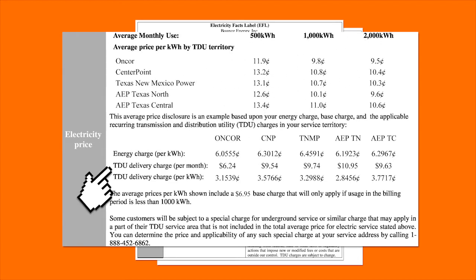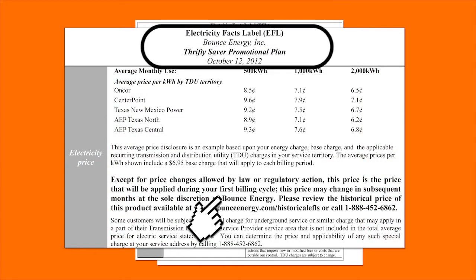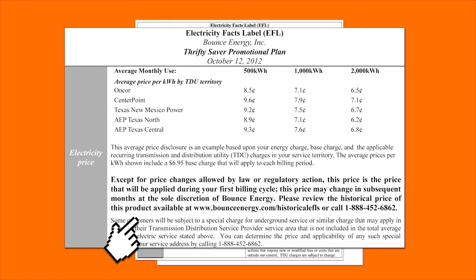If you are on a fixed plan, you will also find information about your key terms. If you sign up for a variable plan, you will see a section covering special terms and conditions. It is important to note that some customers may be subject to special charges for underground service or other charges that may apply to your TDU service area.